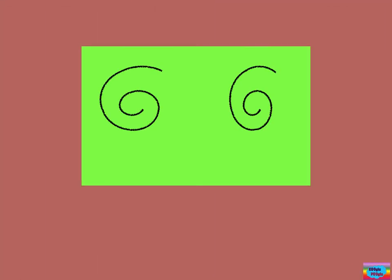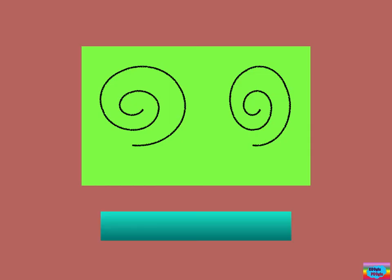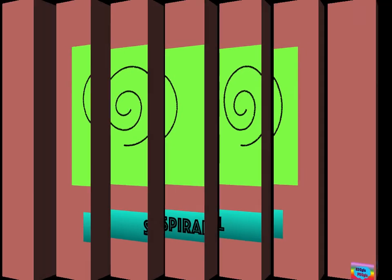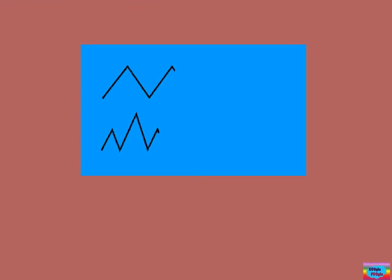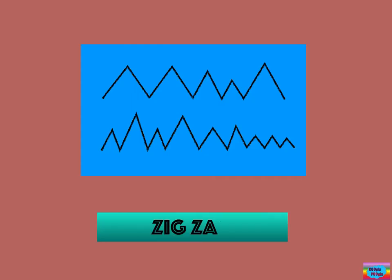This is called a spiral line. We use these to make little silly eyes. This is called a zigzag line. We use these to make mountains and sharp teeth.